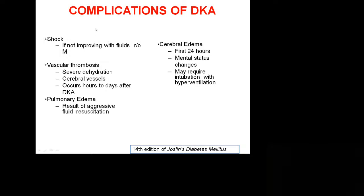Complications of DKA: shock — if not improving with fluids, rule out MI or pancreatitis and third space fluid collection. Vascular thrombosis — severe dehydration can cause venous thrombosis in cerebral vessels and limb thrombosis causing gangrene. Pulmonary edema — aggressive fluid resuscitation of 7 to 15 liters can correct dehydration but at the same time the patient can develop pulmonary edema, which is very important when the left ventricle is compromised or the patient has CCF — always go slow. Cerebral edema can also occur in the first 24 hours, causing mental status changes — patient becomes stuporous, comatose, or disoriented — and may require intubation with hyperventilation to wash out CO2.